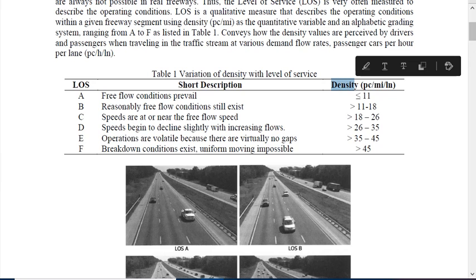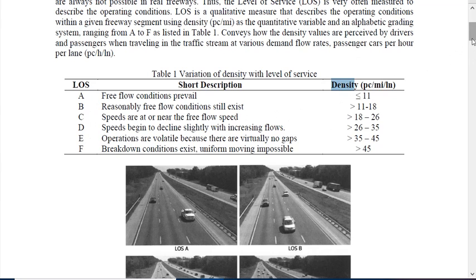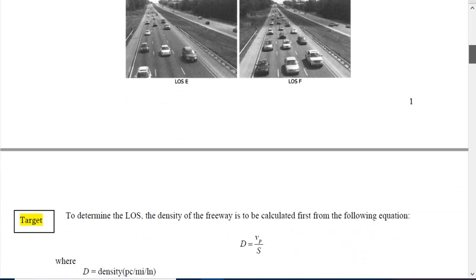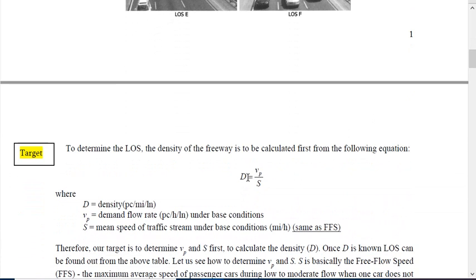To find the level of service, we must find density first. If density is good then our design is good; if not, we revise our design by increasing the number of lanes or lane width. Our target is to find density D. Density D equals VP divided by S.